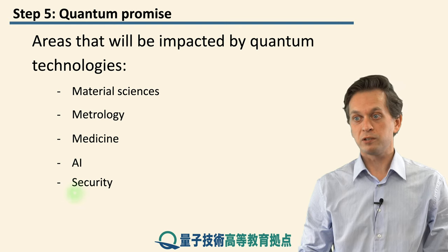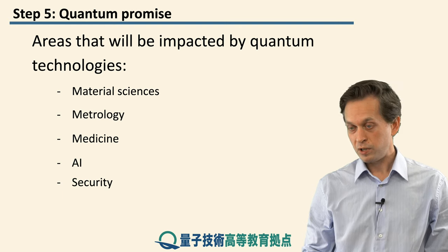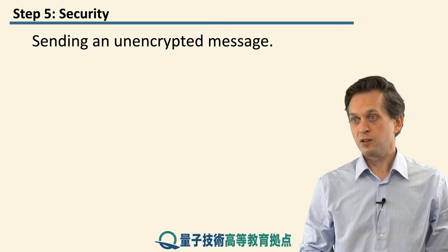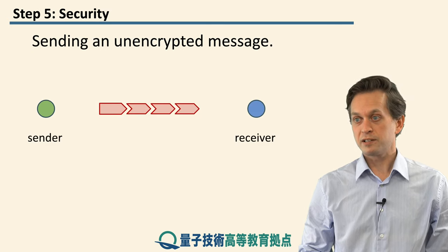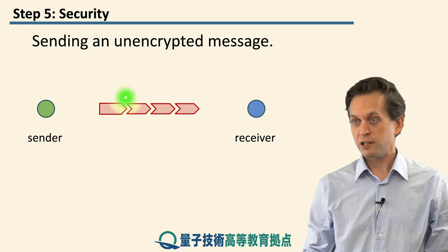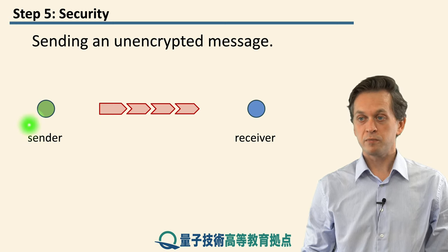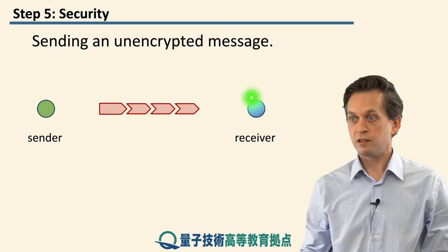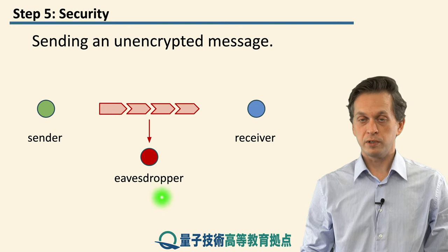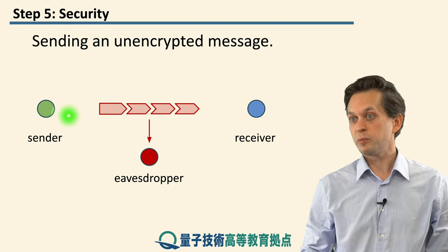Because this module is about quantum communication, let's have a look at the last one: quantum security. Let's say that we have a sender who wishes to send a message to a receiver. This red channel here is unencrypted — that means whatever message the sender has, it doesn't do anything to it, it just sends it down the channel. And let's consider that in the middle there's an eavesdropper who is trying to gain access to the message.